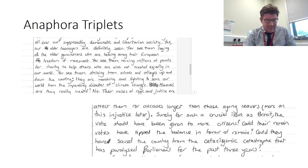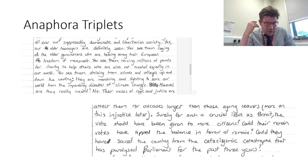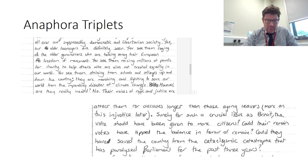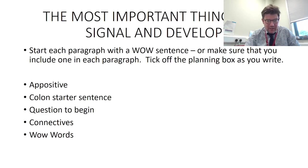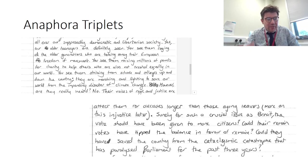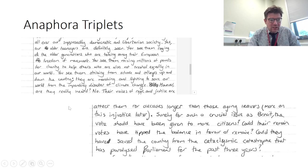Right, the other thing is anaphora, triplet. So I'm saying try range of sentences. Don't write words, write music. Range of long, short sentences, medium length sentences, long sentences, imperative sentences, commands. Simon says commands, they are there. Simon says commands, get them in, especially towards the end. But anaphora and the pattern of three. So just two examples which I think work. So here you've got: yes, our older teenagers are definitely seen. And then you've got your pattern of three. You see them raging at the older generations who are taking away their European freedom of movement. You see them raising millions of pounds for charity to help others who are also not treated equally in our world. You see them striking from schools and colleges up and down the country.